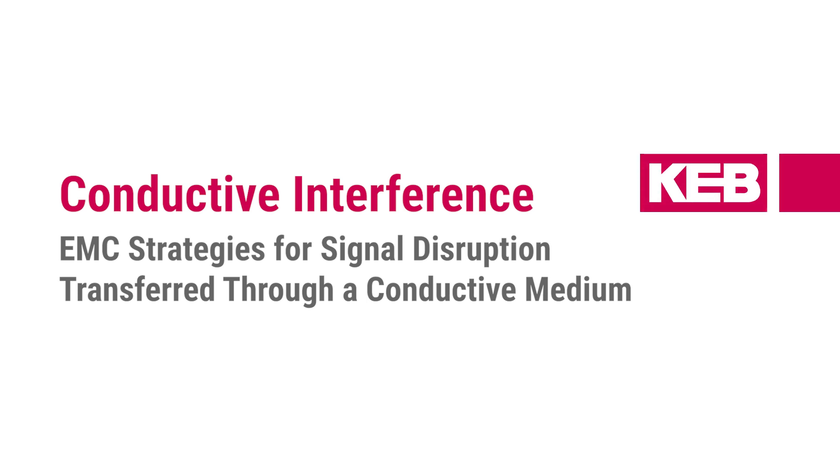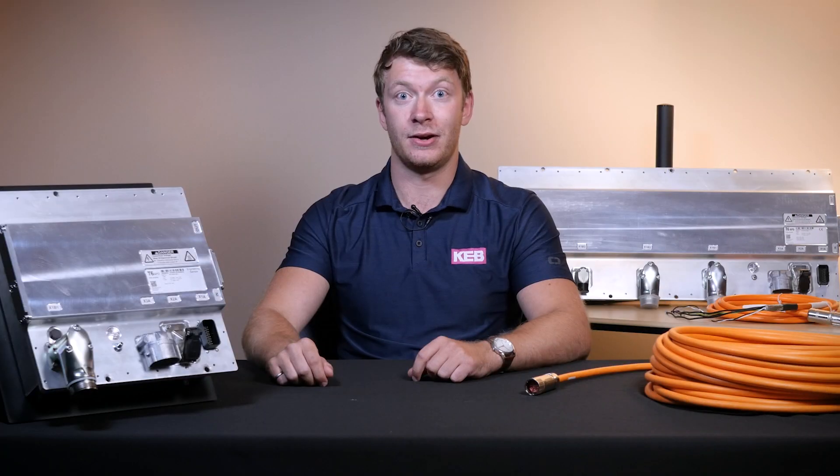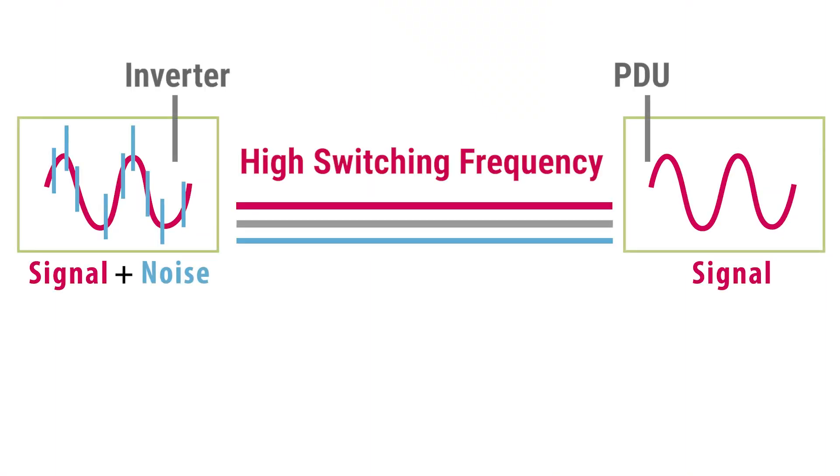Conductive emissions are the kind of interference that's transmitted through a conductor. With this cable here, you could have the example of an inverter with a high switching frequency transmitting that interference through the conductor to another component.